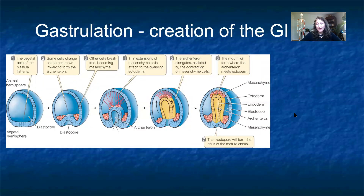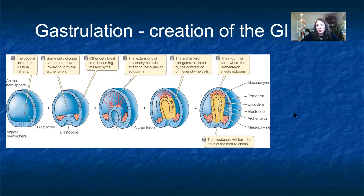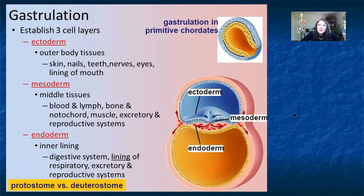After the embryo is embedded in the endometrial lining, a process called gastrulation occurs — the development of the GI tract and three different germ layers. That hollow ball of cells infolds, making a tube inside a larger sphere, setting up the ectoderm, mesoderm, and endoderm. If you remember from the digestive system, humans are essentially a tube with two openings — mouth and anus — and that gastrulation process is the beginning of setting up that giant tube.